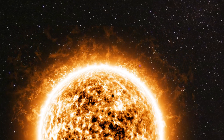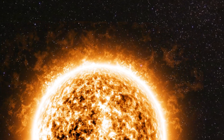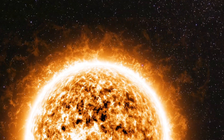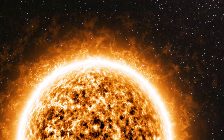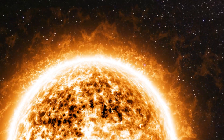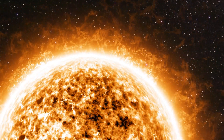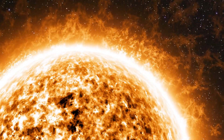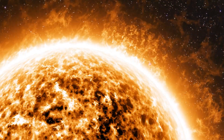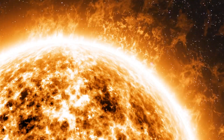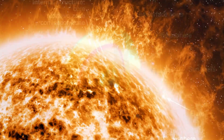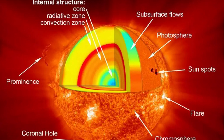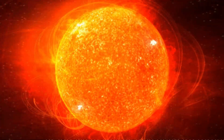The Sun is composed of several layers, each with distinct characteristics. These layers, from the innermost to the outermost, begin with the Core — the innermost layer where nuclear fusion occurs. Hydrogen atoms fuse to form helium, releasing vast amounts of energy. It is extremely hot, about 15 million degrees Celsius, and generates the Sun's energy through nuclear fusion reactions. This energy gradually makes its way outward through the layers.